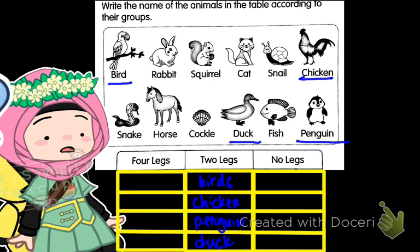Now, four legs. How about rabbit? Rabbit is four legs. Now squirrel, cat, and horse. Write them down here — rabbit, squirrel, cat, and horse.